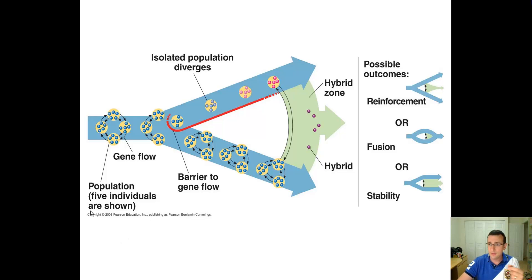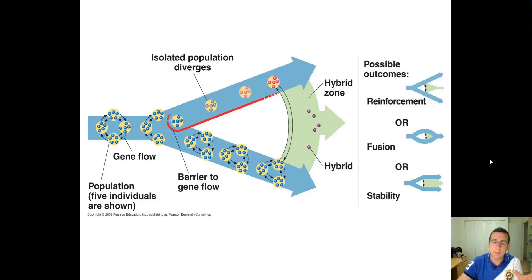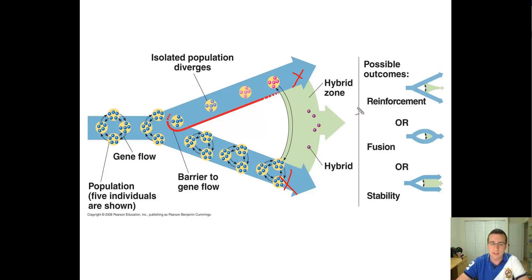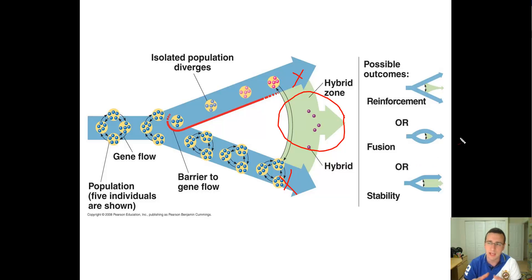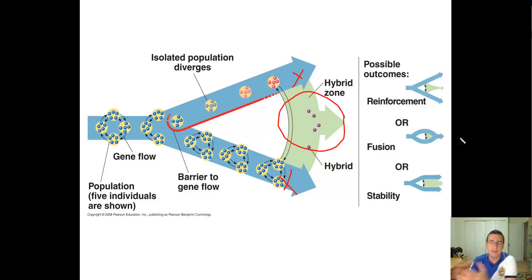If the hybrid actually has a bigger advantage than either of the parent species, then what ends up happening is what we call fusion. That's when the hybrid is actually better than either of the parent species, meaning the advantage goes to the hybrid. So all you have left over time is the hybrid — and that's fusion. We're going to talk about each of these examples so you can see that once divergent evolution takes place and you have a hybrid zone, interesting things will happen in it.